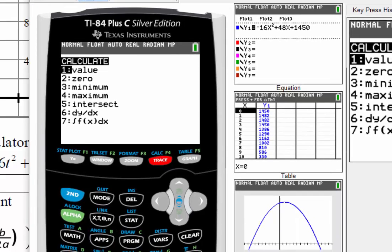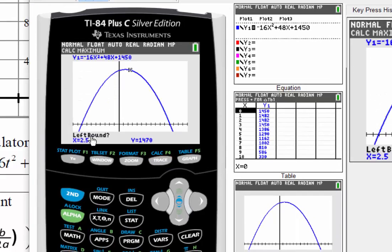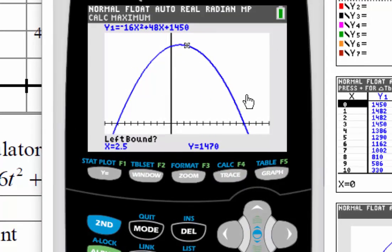And then your calculator says, all right, left bound. So you want to move your cursor, right? Up here's my cursor. I want to move it to the left of where I think the maximum value is. So my cursor is clearly to the left of the max value. I press enter.